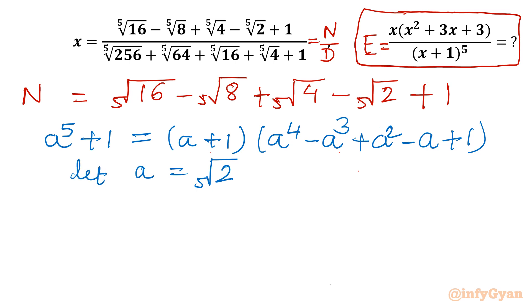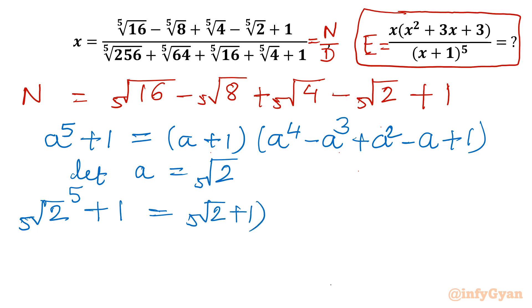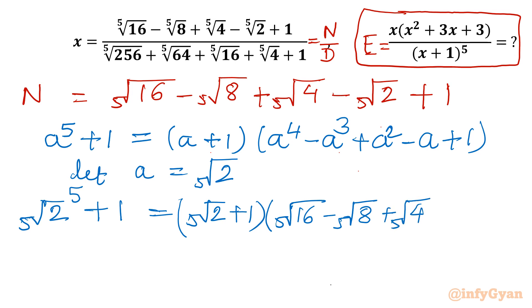So we write a⁵, which becomes 5th root of 2 whole power 5, plus 1. On the right-hand side it will be (5th root of 2 + 1) times: a⁴ gives 5th root of 16, minus a³ gives 5th root of 8, plus a² gives 5th root of 4, minus 5th root of 2, plus 1. If you check this second bracket, it is nothing but our numerator.